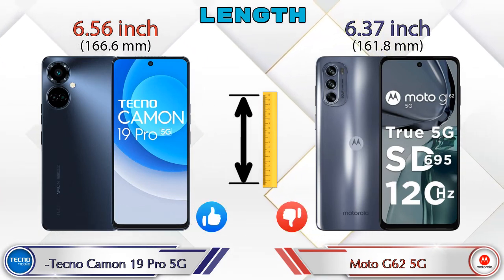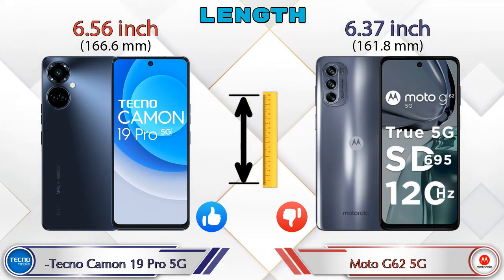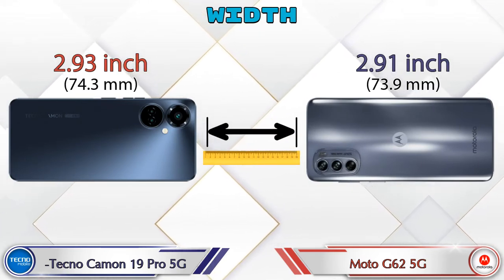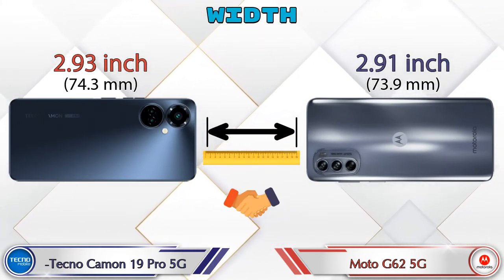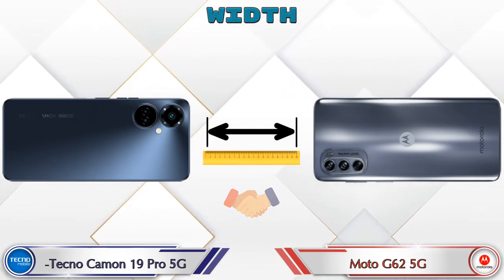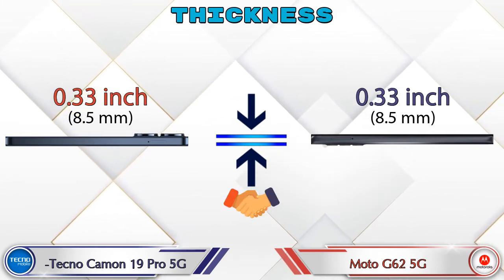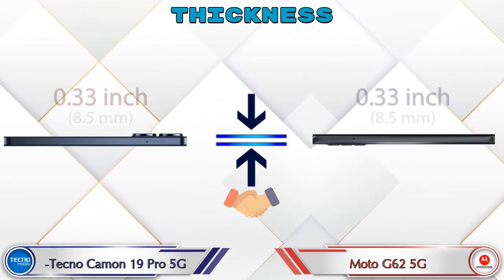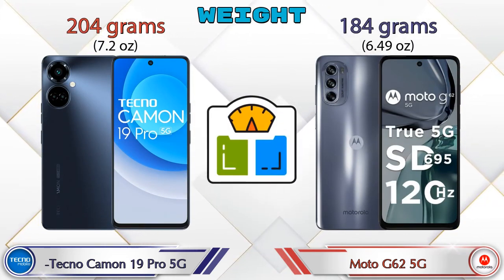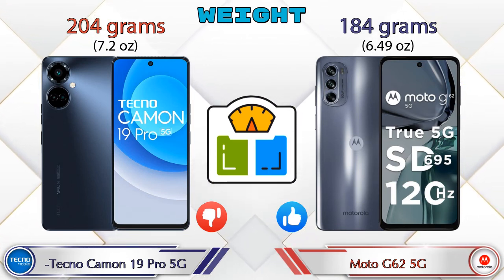Width: the Camon 19 Pro 5G is 2.93 inches and the Moto G62 5G is 2.91 inches, which are almost the same. Both phones have the same thickness of 0.33 inches. Talking about weight: the Camon 19 Pro 5G is 204 grams and the Moto G62 5G is 184 grams.